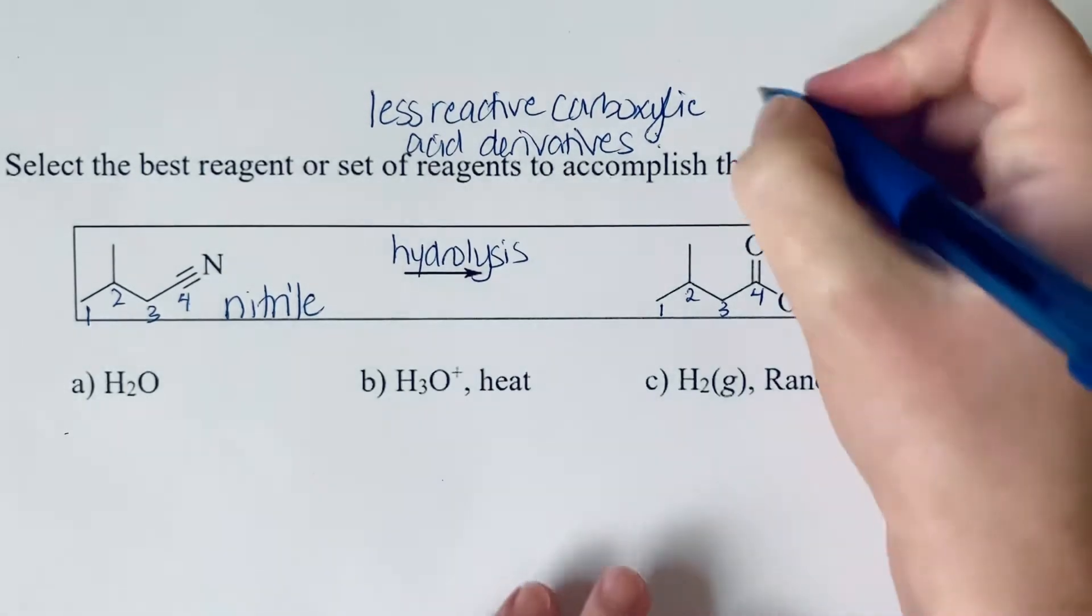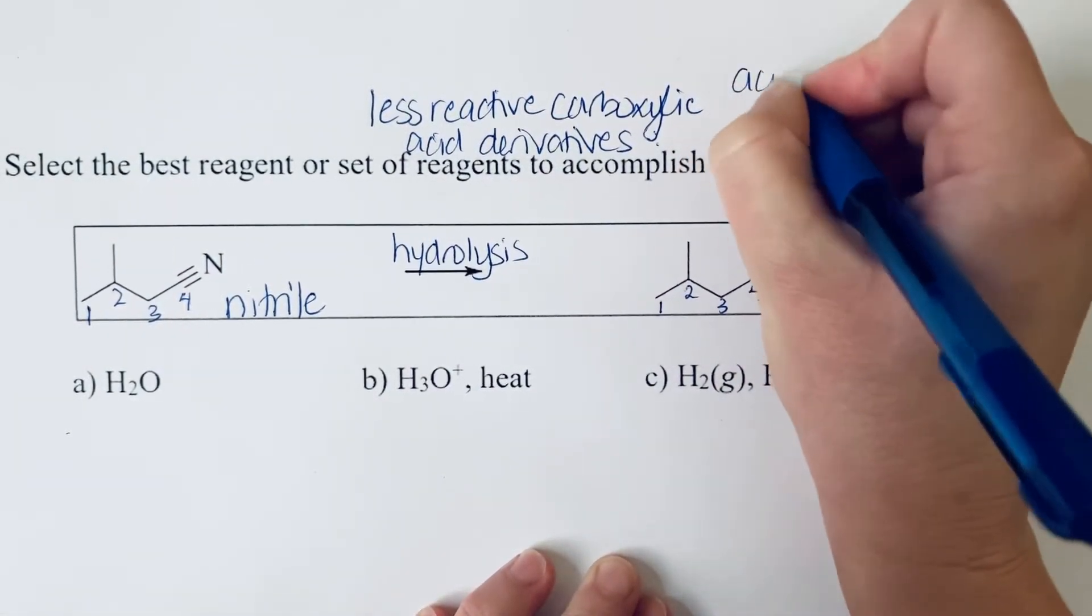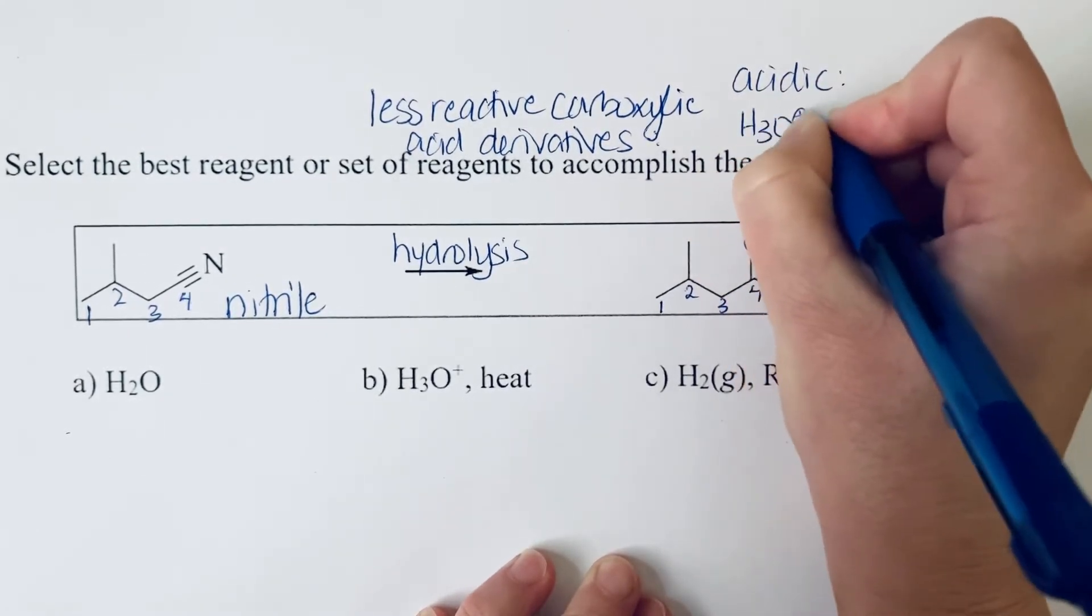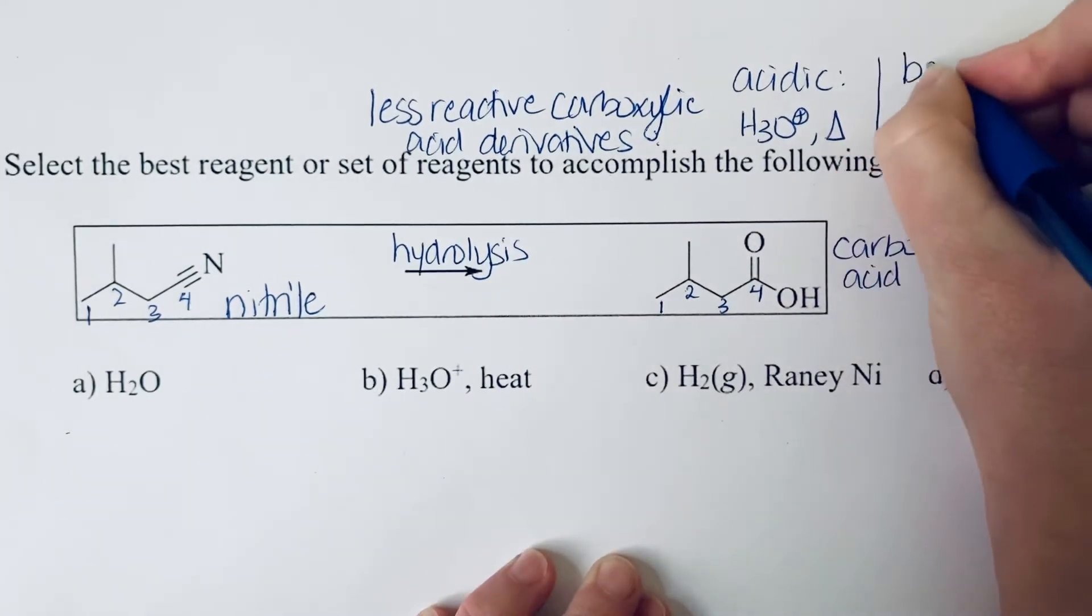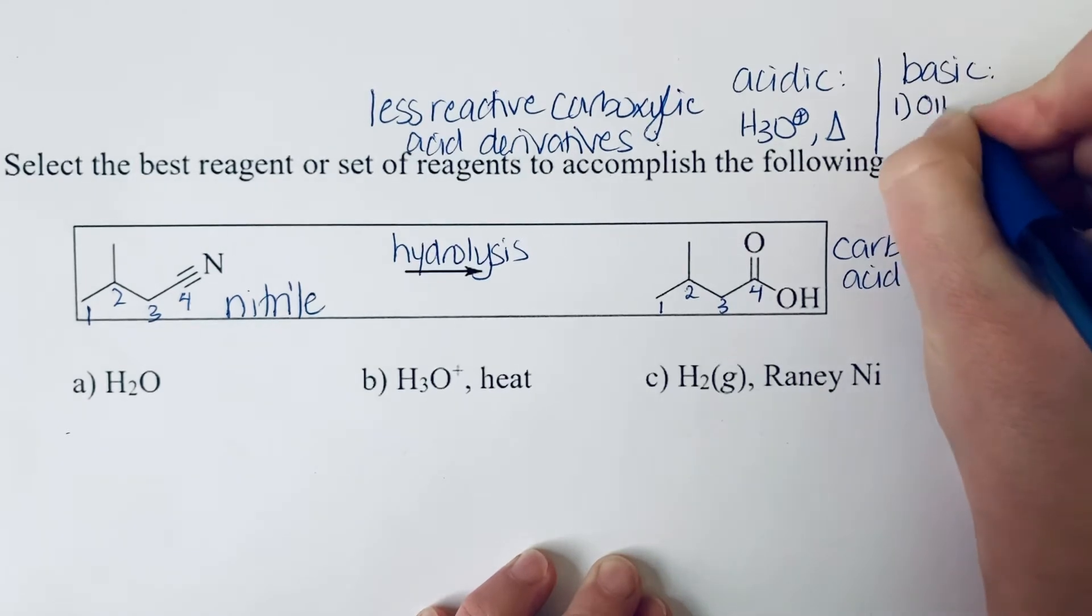If you are looking at acidic conditions, it's going to be acid and you're also going to need to heat that up, or you could do this under basic conditions, in which case you would first heat it with aqueous base, and this is where the actual hydrolysis takes place.